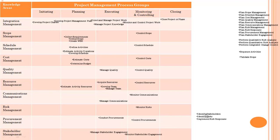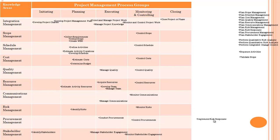Identify stakeholder — it will come under process group initiating and knowledge area stakeholder management. Identify risk will come under planning process group and knowledge area risk management. Implement risk response — implement means some actions are being taken place, so it will come under executing process group.